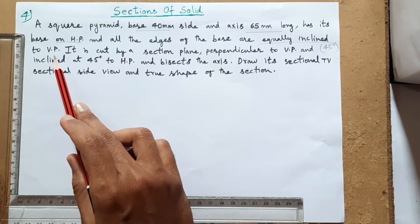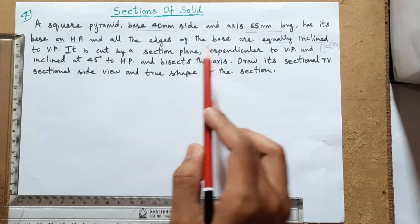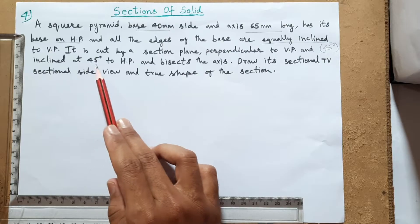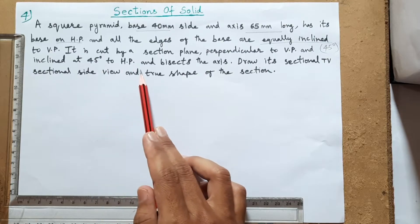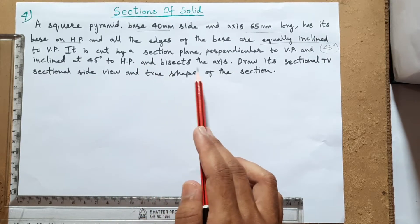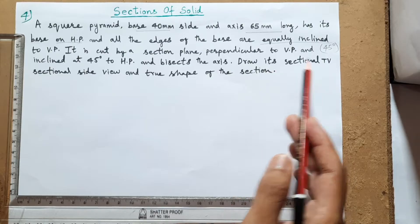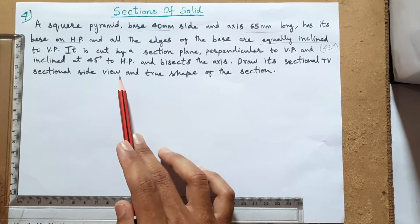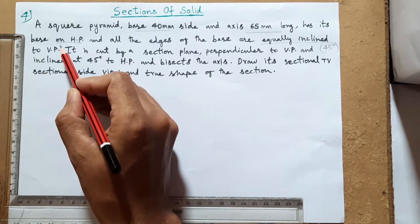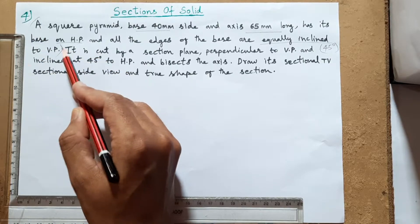Equally inclined to VP. It is cut by a section plane perpendicular to VP and inclined at 45 degrees to HP, and bisects the axis. We need to draw its sectional top view, sectional side view, and true shape of the section. We'll complete the base problem first, then handle the section part.